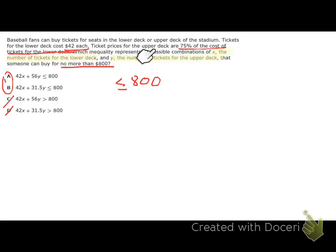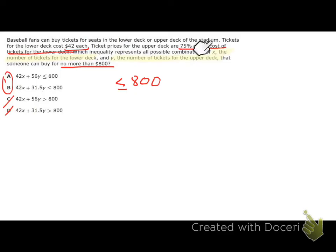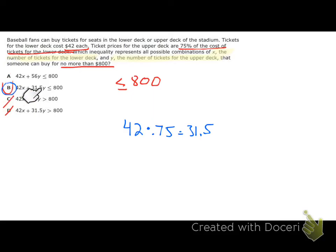Lower deck tickets are $42 each, so that's 42x. Upper deck tickets cost 75% of $42, which is 0.75 × 42 = 31.5, so that's 31.5y. The total of these together should be less than or equal to 800 because it says no more than 800. The answer is B. This question is really about reading and interpreting the problem correctly.